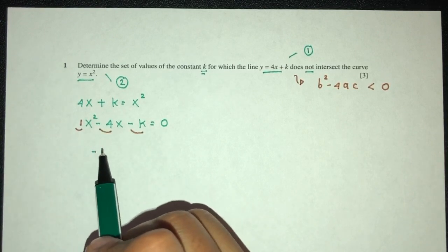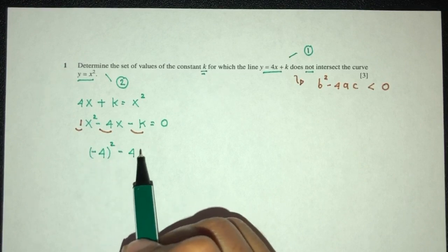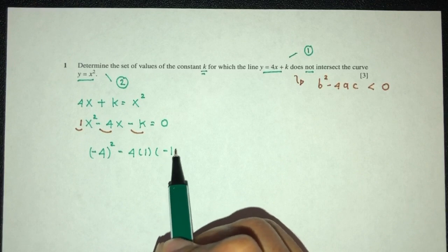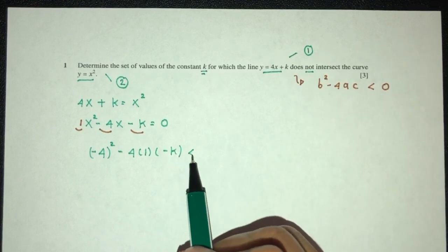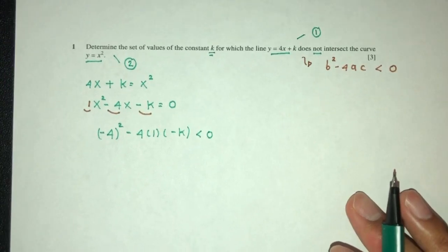So b² is (-4)² - 4 times a times c, and have to be less than zero because they do not meet, which means they don't have any solution.